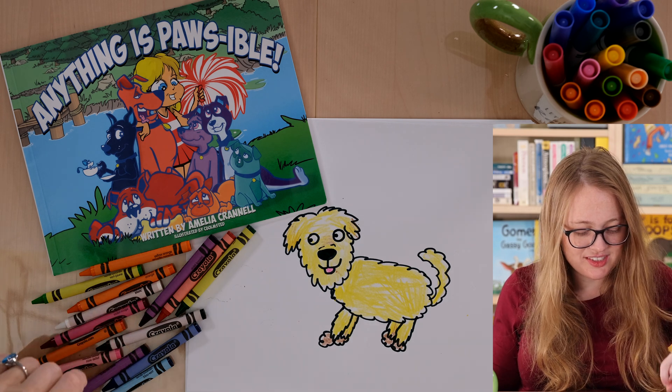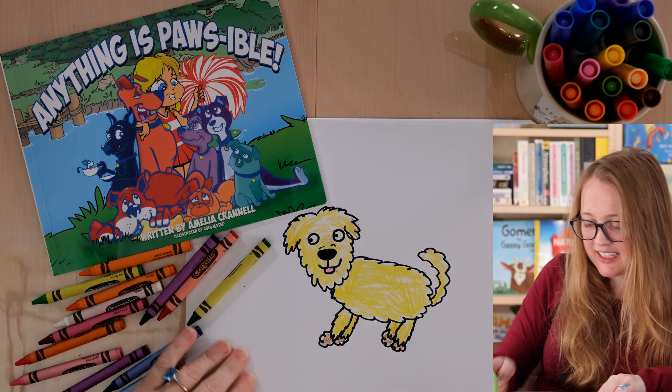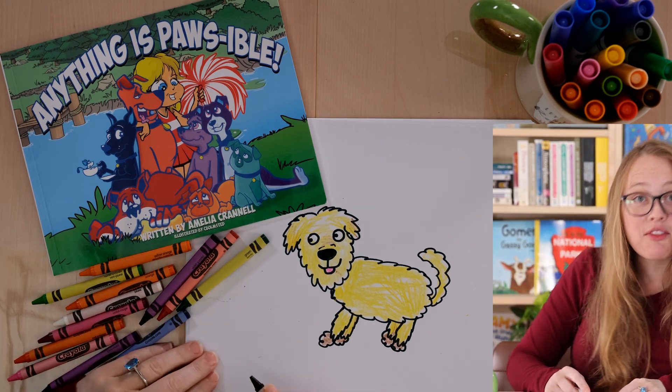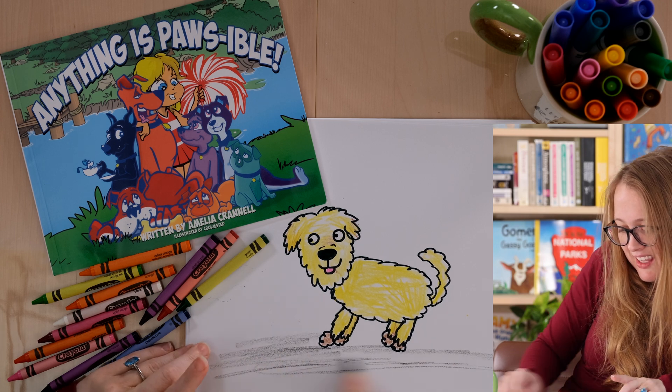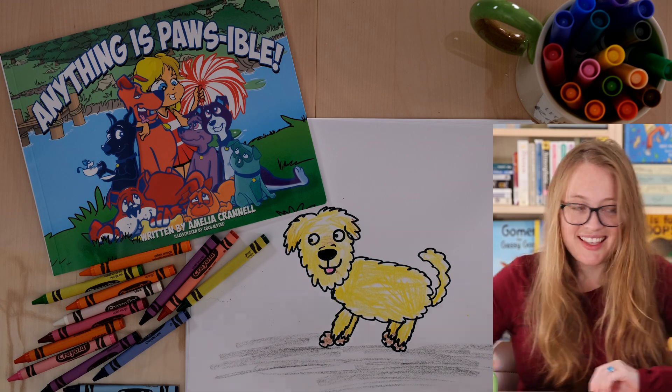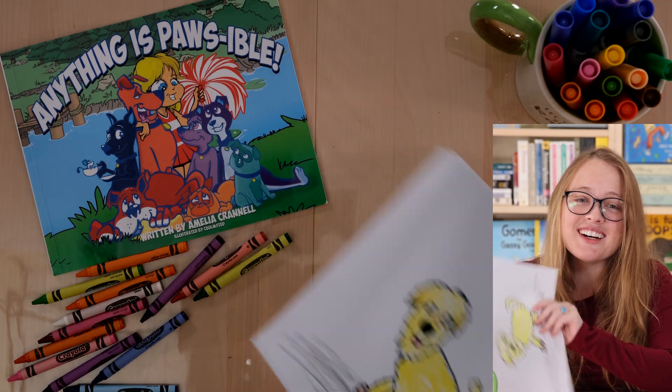And then, let's just draw a line kind of underneath it so that it's not floating in space like this. Yeah. And that's how to draw a fun dog. See?